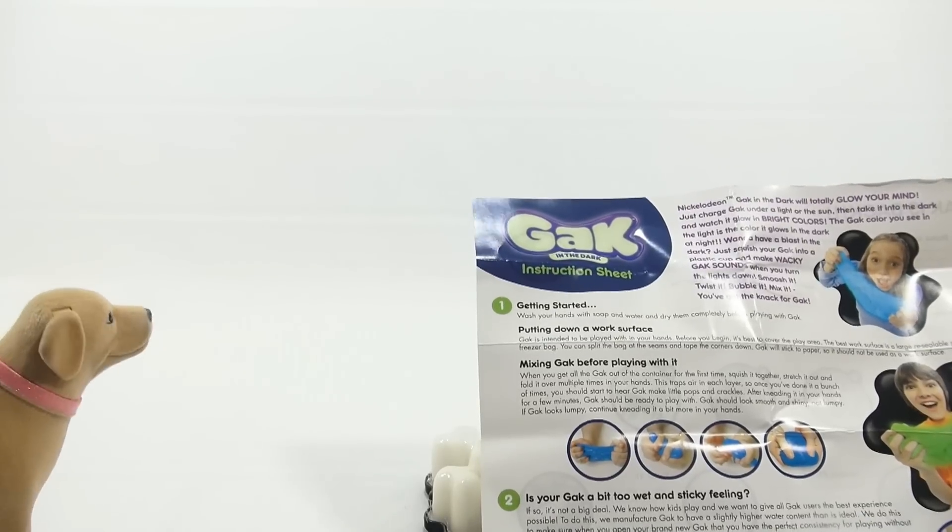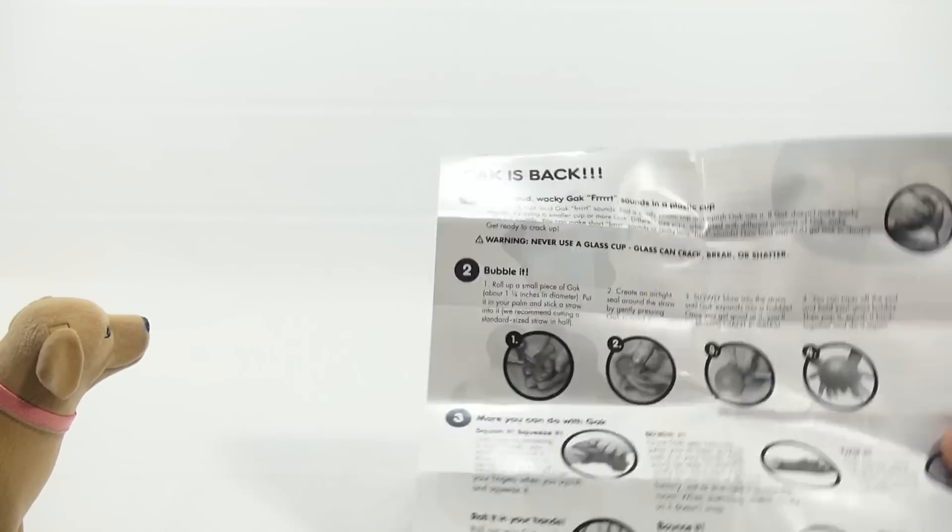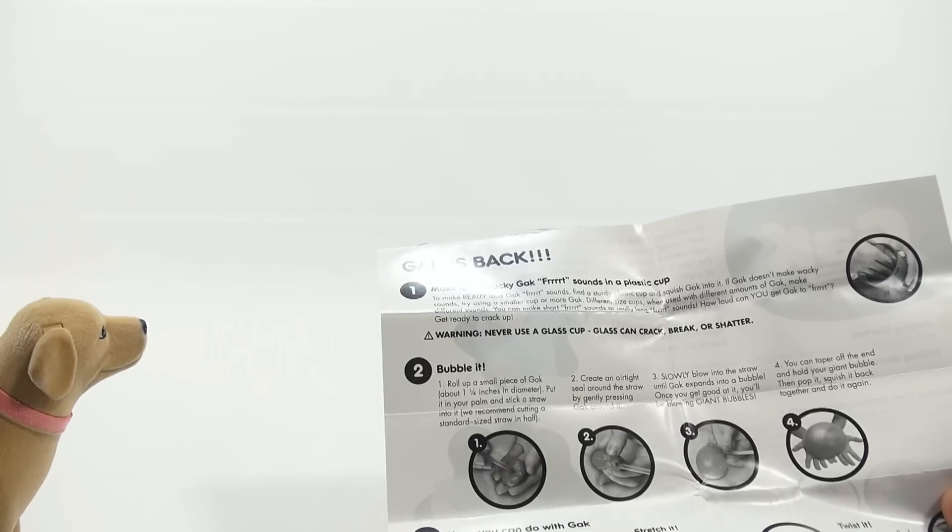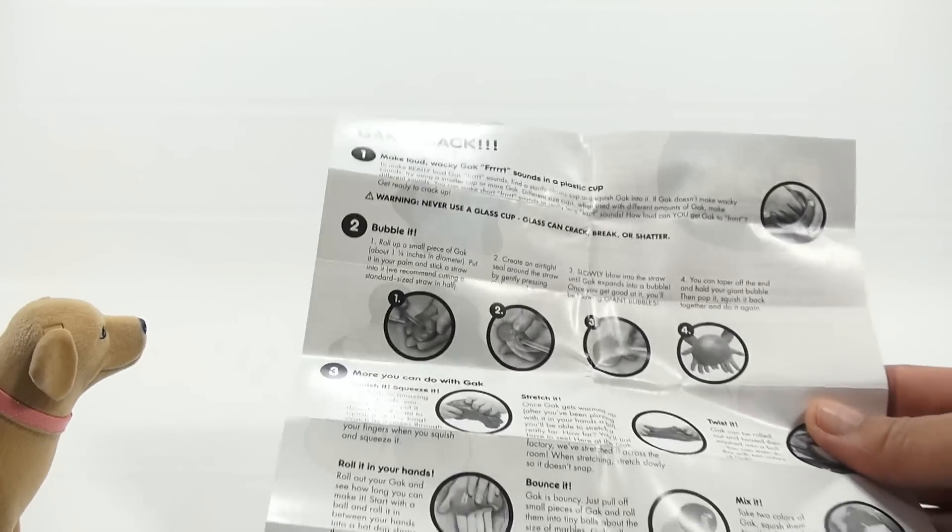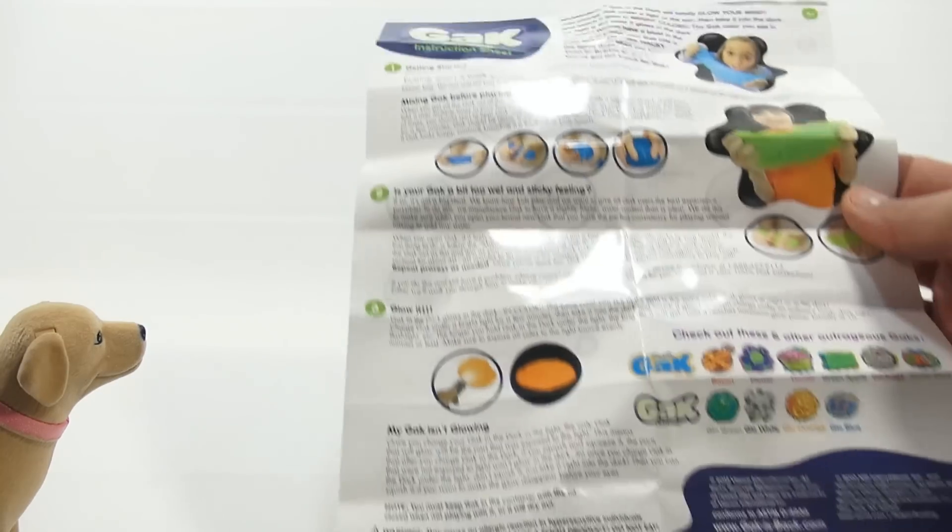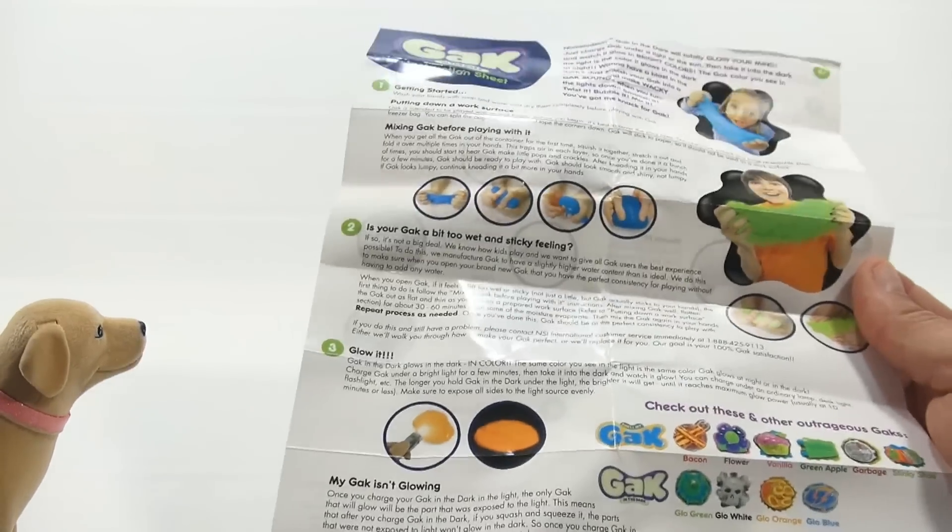Check it out. Let's see. So it glows white. We might have to charge it in the light, huh? That's what it said. If you were here for the reading of the instructions, you would have gotten that. Oh, no. I wasn't here. Putting down a work surface. Okay. Mixing Gak before playing with it. Okay. Is your Gak a bit too wet and sticky feeling? Okay. All right. We read that. Let's go to the back now.